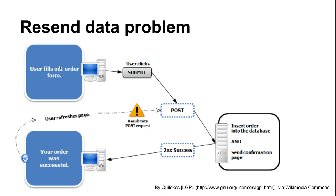So here's the problem. The user fills out the form and clicks submit, which sends the form data using POST. The script on the server takes the action and in the same script sends a confirmation page back to the browser. So when the user refreshes the page, they're refreshing this script. The message is displayed, the form data is reposted, and the script executes again, so any action that was taken will happen again.